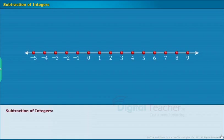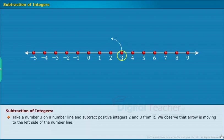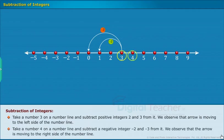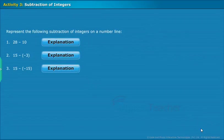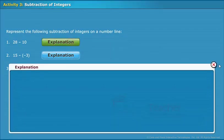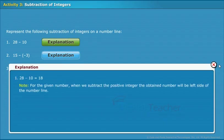Let us learn about subtraction of integers. Take a number 3 on a number line and subtract positive integers 2 and 3 from it. We observe that the arrow is moving to the left side of the number line. Take a number 4 on a number line and subtract negative integers minus 2 and minus 3 from it. We observe that the arrow is moving to the right side of the number line. Note: for a given number, when we subtract a positive integer, the obtained number will be on the left side of the number line.